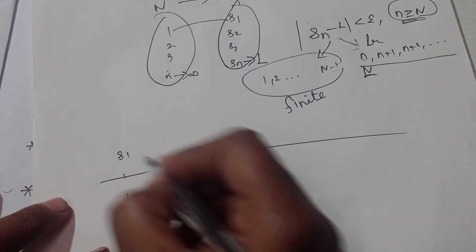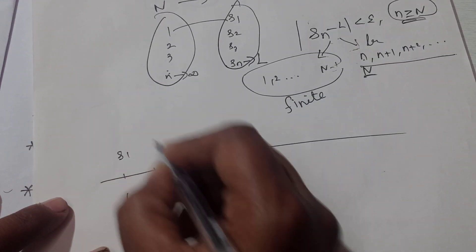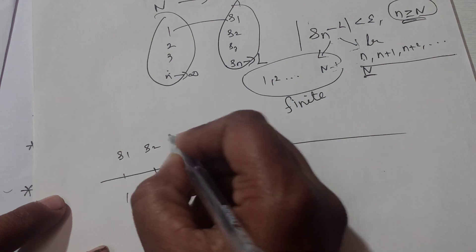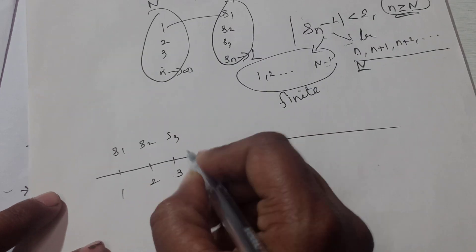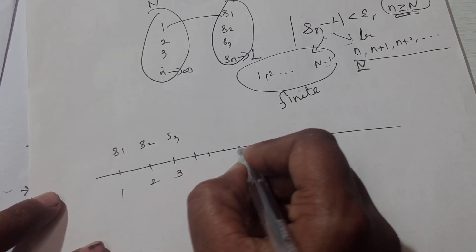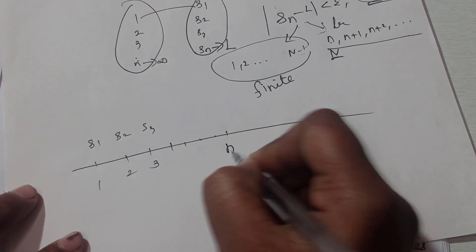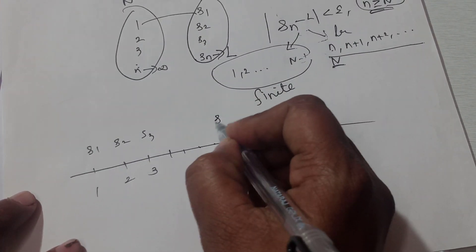There is a natural number mapping: 1 maps to S1, 2 maps to S2, 3 maps to S3, and so on. n maps to S_n.